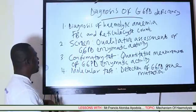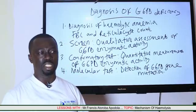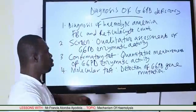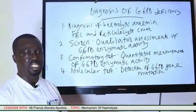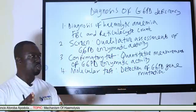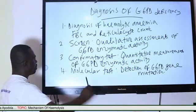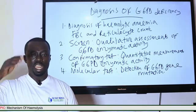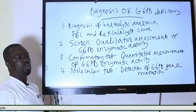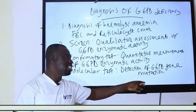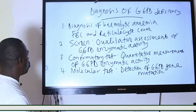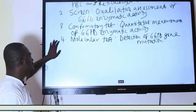The next diagnostic step is a screening test — a qualitative screening method used to assess the activity of the GCSPD enzyme, commonly performed using the methylene blue reagent and sodium nitrite glucose reagent. Then there is the confirmatory test, which is the quantitative measurement of GCSPD enzymatic activity. We also have molecular tests that detect the GCSPD gene mutation, which are also more confirmatory. So that is it about the diagnosis of GCSPD enzyme deficiency. Thank you.